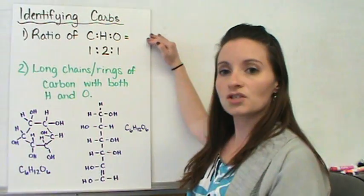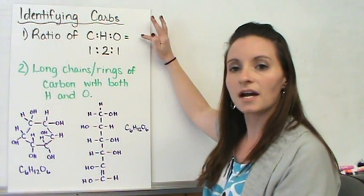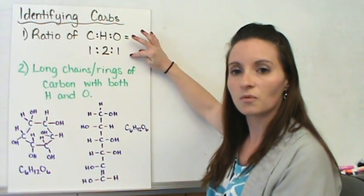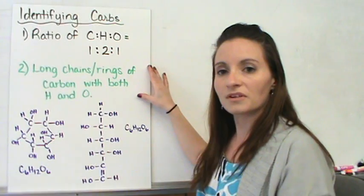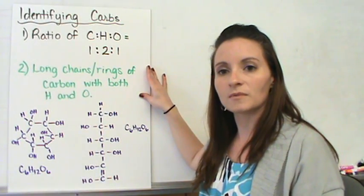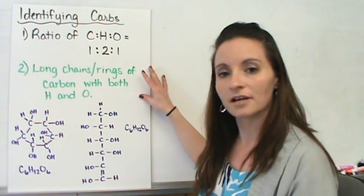If we're going to try to identify carbohydrates, the carbon, hydrogen, oxygen has a 1 to 2 to 1 ratio. Long chains or rings of carbon that have the hydrogen and oxygen in them would be a carbohydrate.